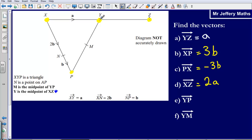The first thing that we're going to do is go from Y to X. So Y to X gives us negative a, we're going in the reverse direction of a. Then from X to P, that's just plus 3b.